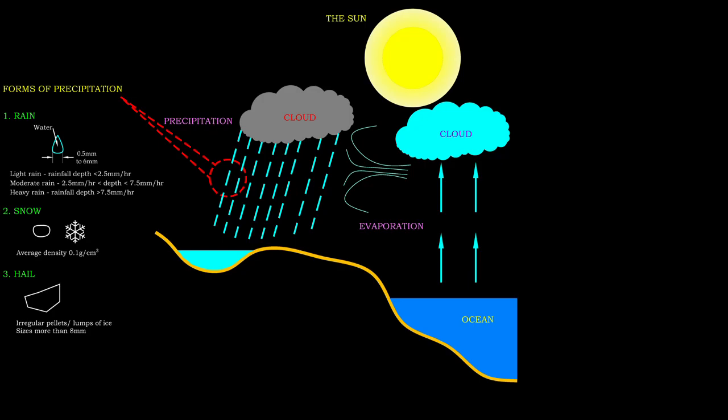Among all the forms of precipitation, rainfall and snowfall contribute significant amounts of water to the earth.